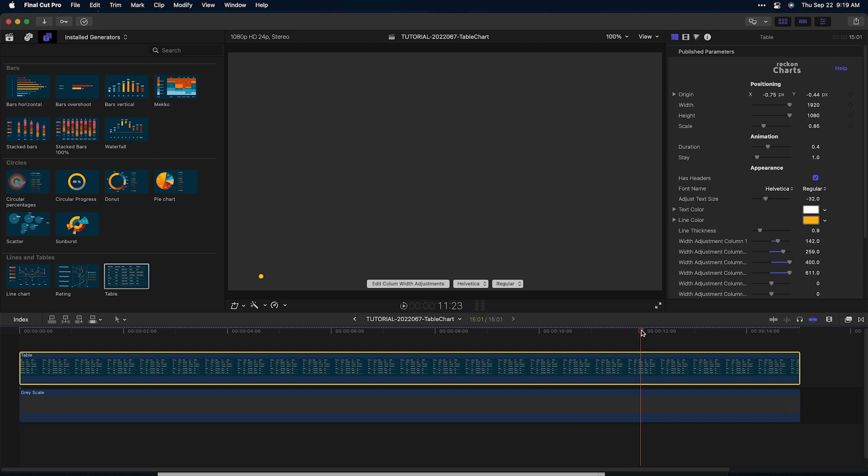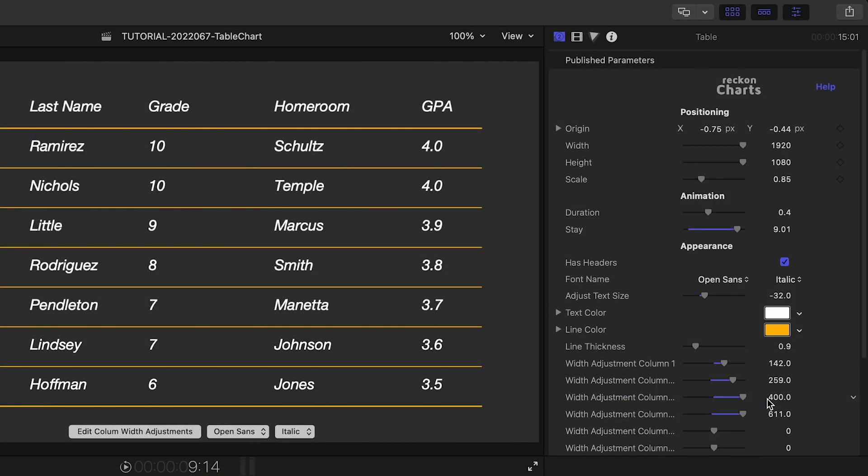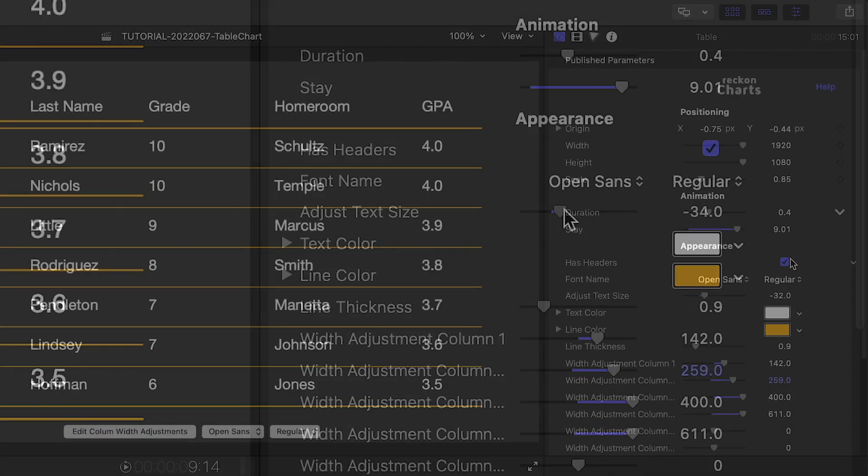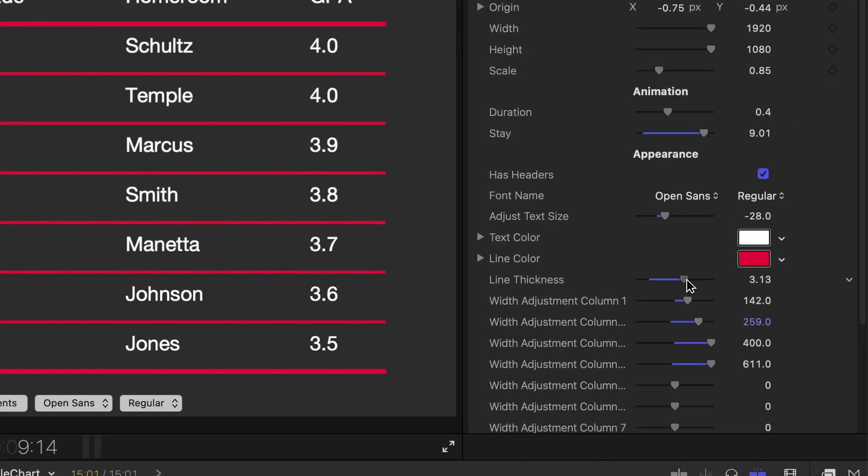I'll adjust the Stay parameter, which is how long the graphic stays on screen before it animates out. I can change my font and text size. I can change the color of the text and lines and adjust the thickness of the lines.